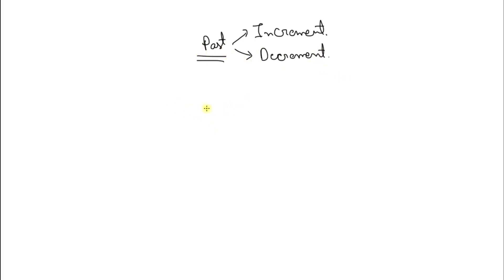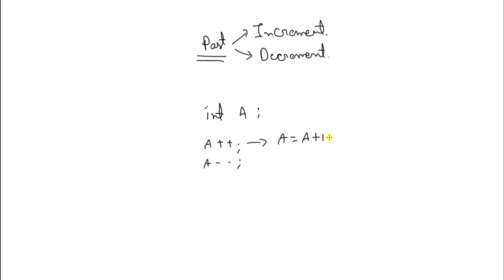As it is post, let's suppose we are having this integer variable, let's suppose 'a' here. And as it is post, it will be like this — this is nothing but a = a + 1. If you have watched my previous video, you will be able to understand this a little quickly.